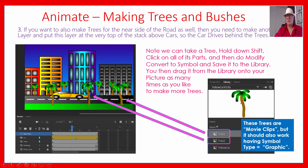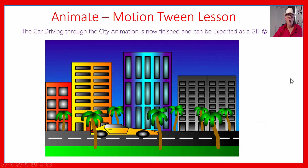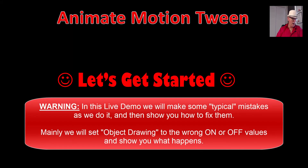We also made another layer called 'near trees' on top of the car layer and drew a few more trees there. The car driving through the city is now finished — do File > Export and export it as a GIF. We've been going for 47 minutes, so we won't build the whole car in the live demo — we'll just show you some tips about drawing it so you can see a few things in Animate.